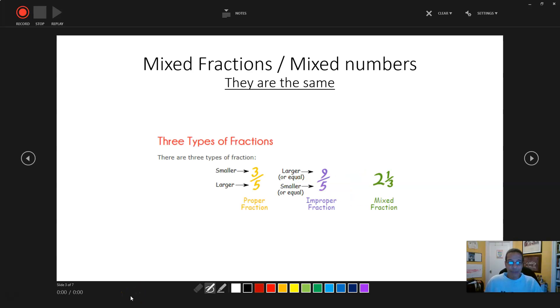There's three types of fractions. You have your proper fractions, which is in between 0 and 1, and the numerator is smaller than the denominator. With your improper fraction, the numerator is actually larger than the denominator.